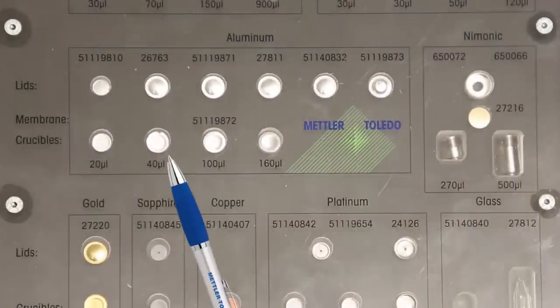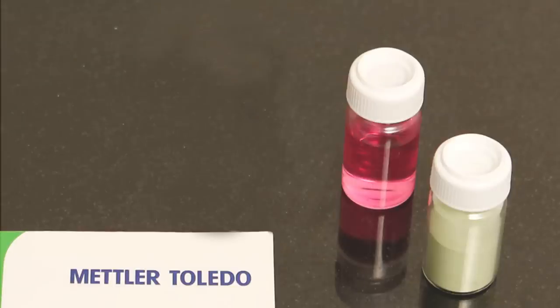We will use the aluminum standard 40 microliter and the aluminum 100 microliter crucible. Samples will be a powder and a liquid suspension.